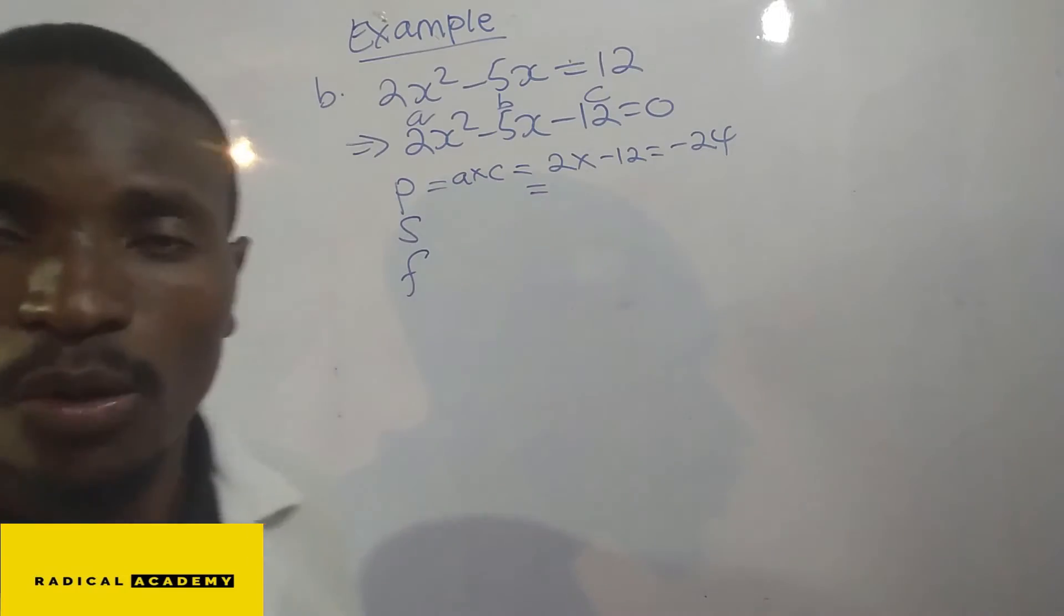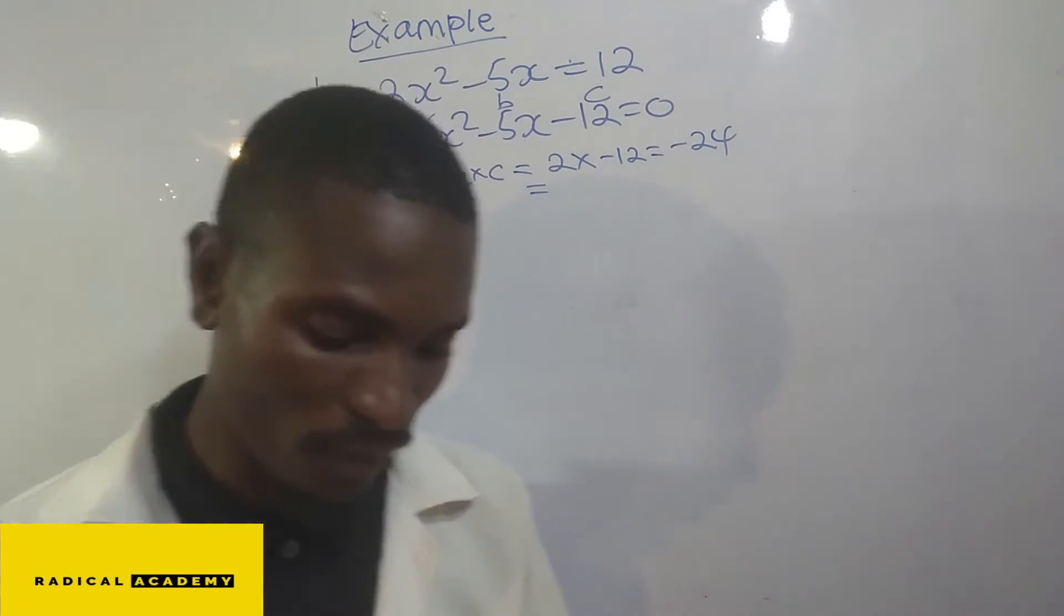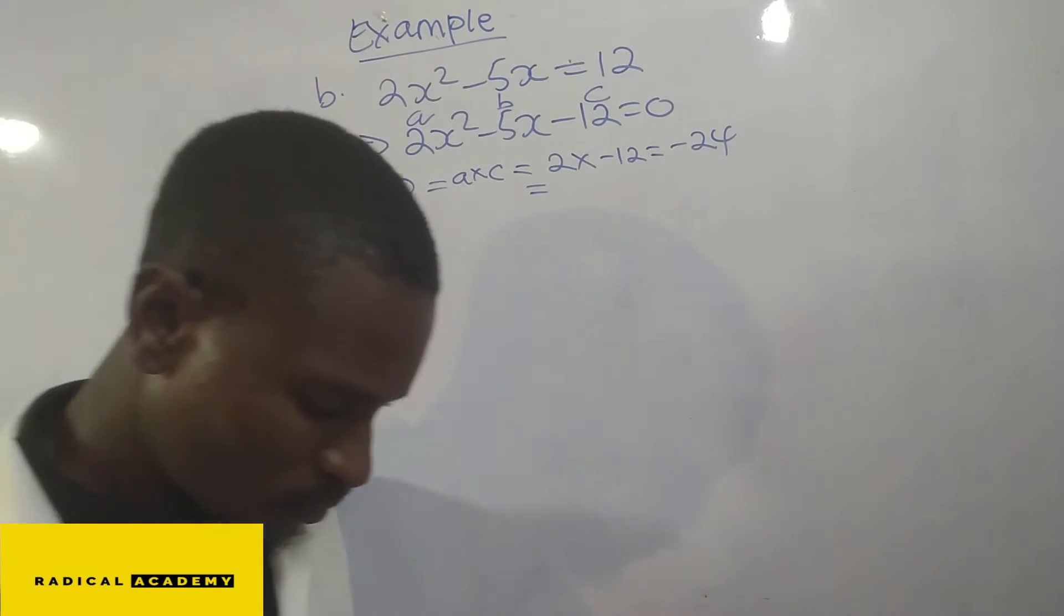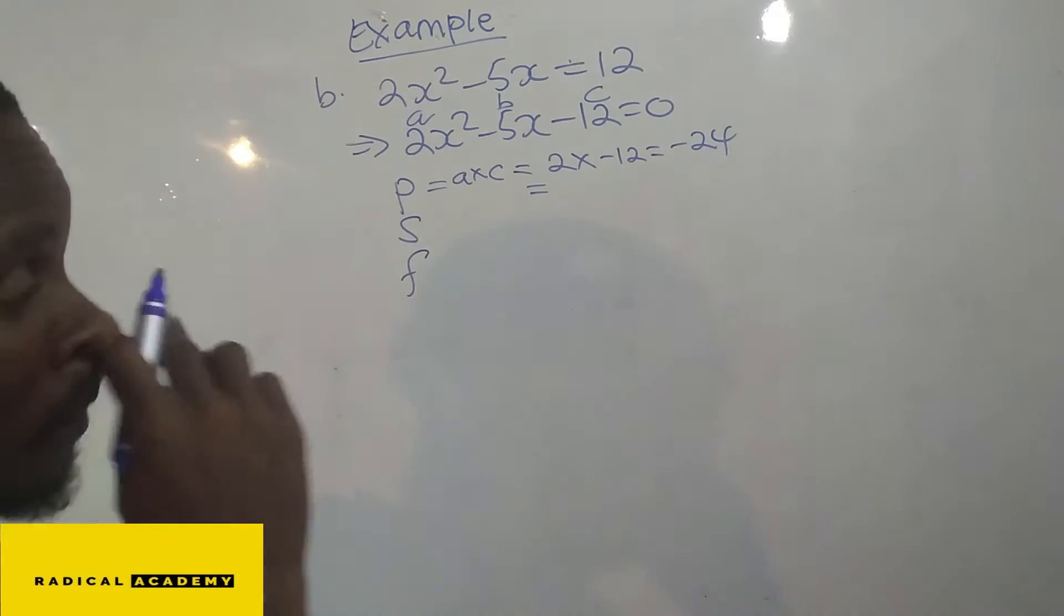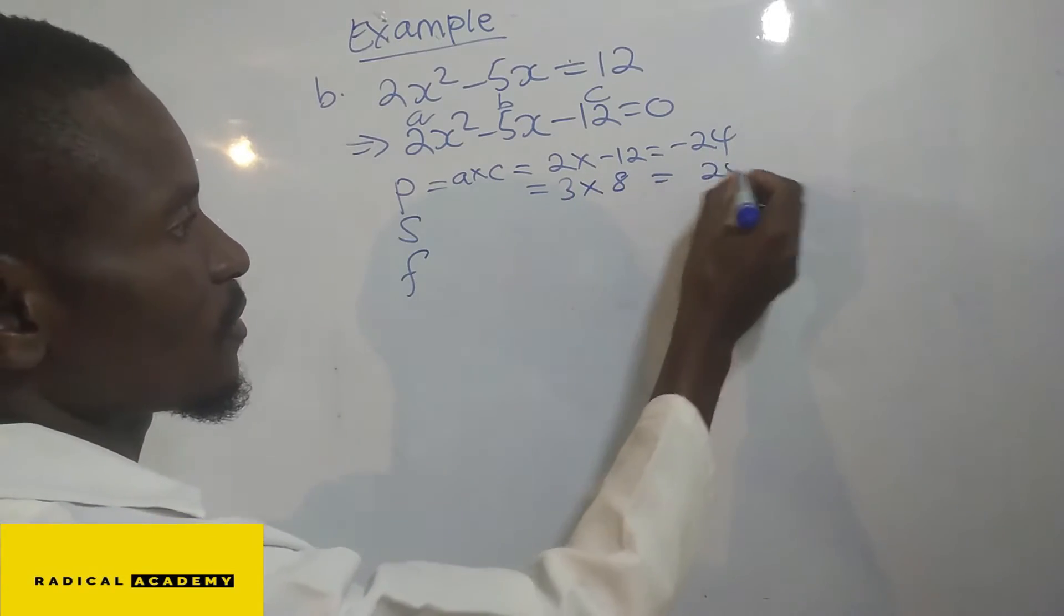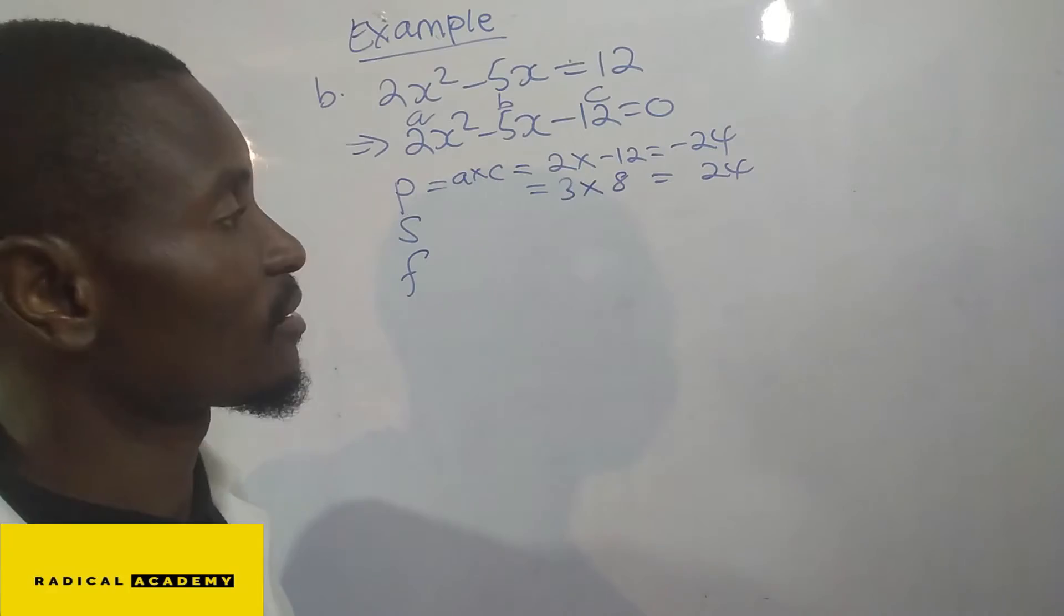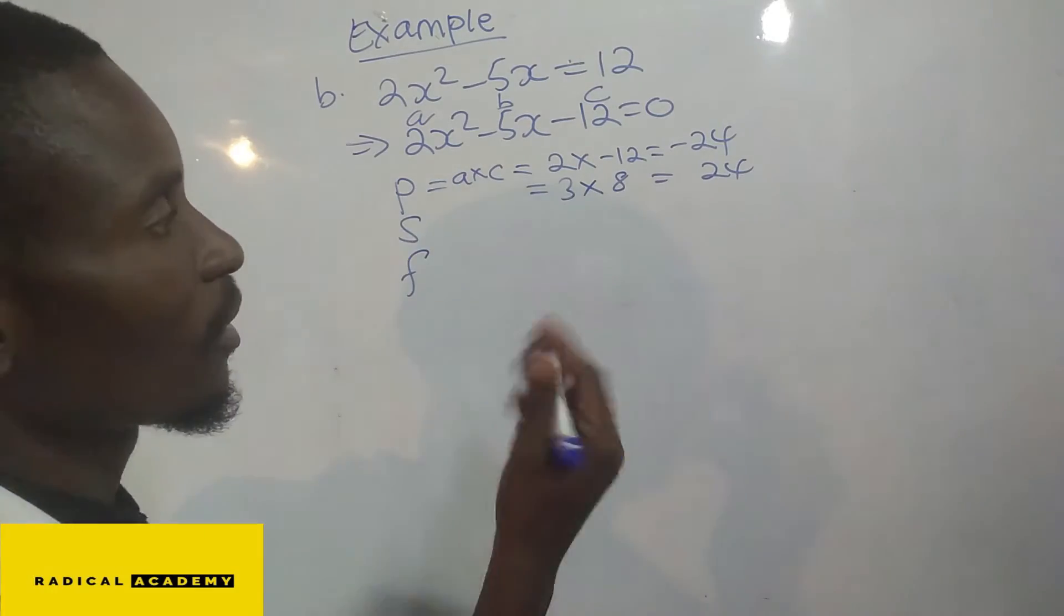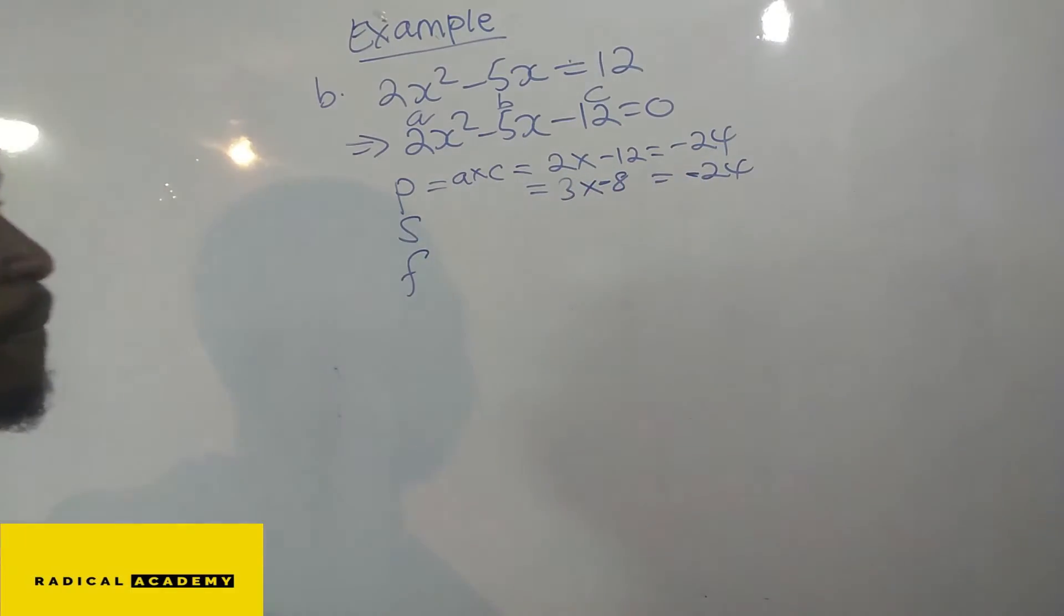So now you'll discover that there are other numbers that you can multiply, two other numbers that you can multiply in order to get negative 24. Apart from that, you have 3 multiplied by 8, that is 24. But you have to understand that our product should be negative 24, not positive 24. So you are going to give 8 a negative.